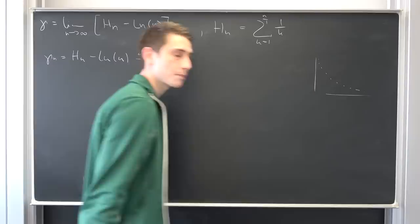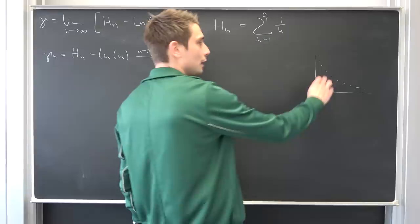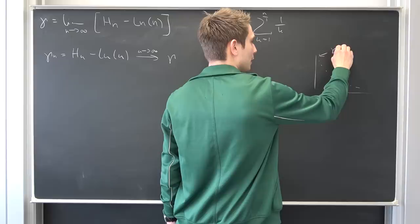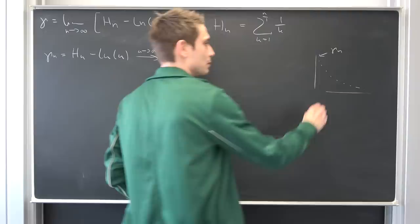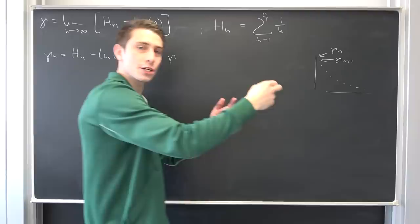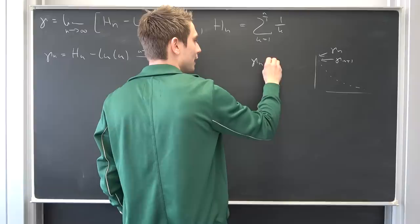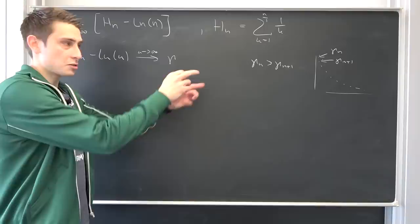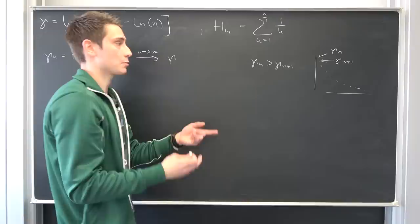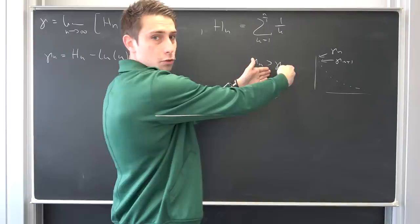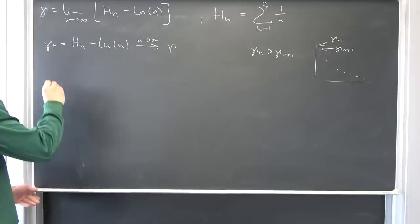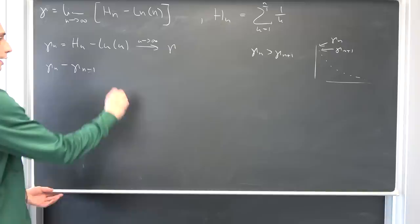More formally: if we have a sequence member γ_n, the next sequence member γ_{n+1} is strictly less than the member before, meaning γ_n > γ_{n+1}. That's what we want to show. For this, we subtract and want to show the difference is actually greater than zero. So we want to look at γ_n − γ_{n−1} and show this is greater than zero.